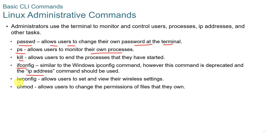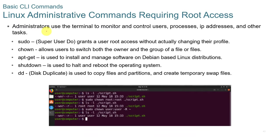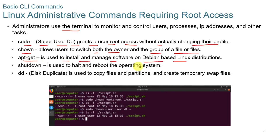Some Linux administrative commands include: passwd, which allows users to change their own password at the terminal; ps, which allows users to monitor their own processes; kill, which stops a process; ifconfig, similar to ipconfig on Windows; iwconfig, which allows users to set and view wireless settings; and chmod, which allows users to change permissions of files they own. For commands requiring root access, use the terminal with the sudo (super user do) command, which grants root access without changing the user's profile. chown allows switching both the owner and group of a file. apt-get is used to install and manage software on Debian-based Linux distributions. shutdown halts or reboots the OS, and dd (disk duplicate) is used to copy files, partitions, and create temporary swap files.